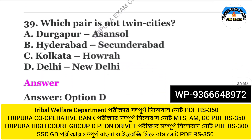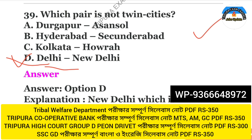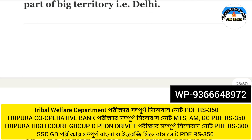Question number 39. Which pair is not twin cities? The answer is Option D: Delhi and New Delhi.